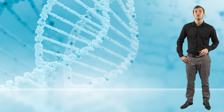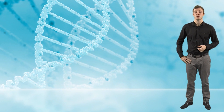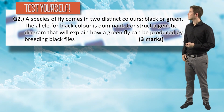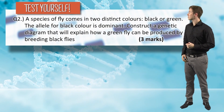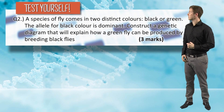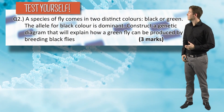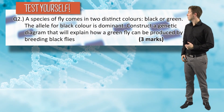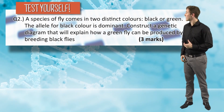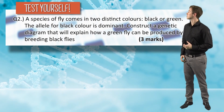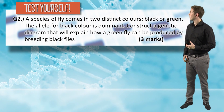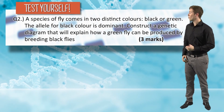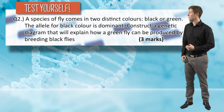Let's take a look at question number two. A species of fly comes in two distinct colours: black or green. The allele for black colour is dominant. Construct a genetic diagram that will explain how a green fly can be produced by breeding black flies. Worth three marks.